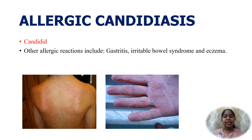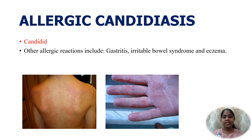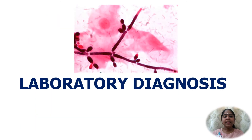Allergic candidiasis is exhibited as candidid — an allergic reaction to the metabolites of Candida, characterized by vesicular lesions in the web spaces of the hands and other areas, similar to the dermatophytid reaction. Other allergic reactions include gastritis, irritable bowel syndrome, and eczema.